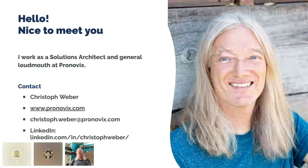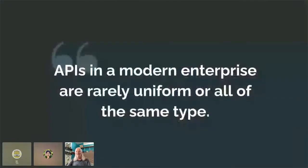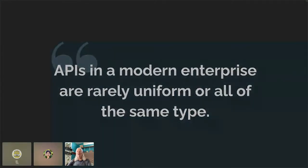The basic premise of the talk today is that APIs in a modern enterprise are very rarely uniform or all of the same type. I think that's a given — we see this all the time when we talk to prospective or existing clients. The reasons are manifold. The first reason is definitely organic growth: in a modern enterprise, various business units start something and other business units start something different, and then you've basically got what we should call a mess.